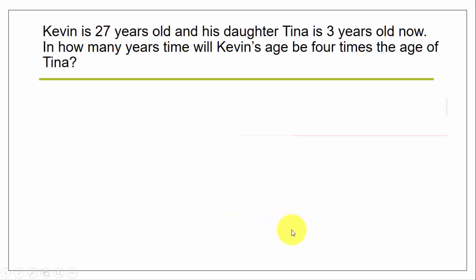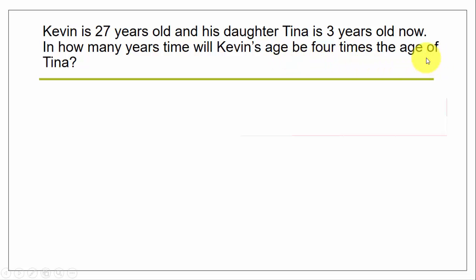When we look at the problem, Kevin is 27 years old and his daughter Tina is 3 years old. In how many years' time will Kevin's age be 4 times the age of Tina? This looks a bit complicated, but if you do it step by step it's quite easy.